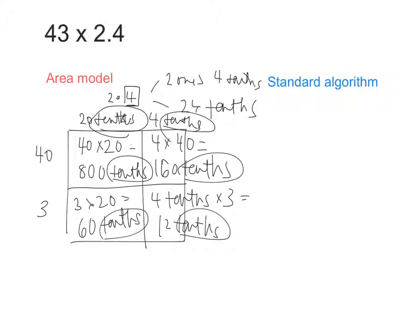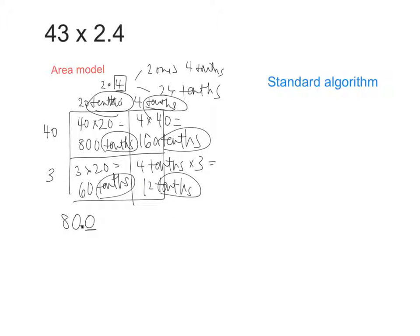So now what we can do is we can add up all those partial products. Now if I have 800 tenths, what whole number is that the same as? 800. Where do I need to put the decimal point to make this the tenths? Itai? Yeah, between the two zeros. So 800 tenths is really the same as 80. Good. Now over here I have 160 tenths. Where do I need to put the decimal point to make that 160 tenths? Arhan? In between the 16 and the zeros. Yeah. So 160 tenths is really the same as what whole number? 16.